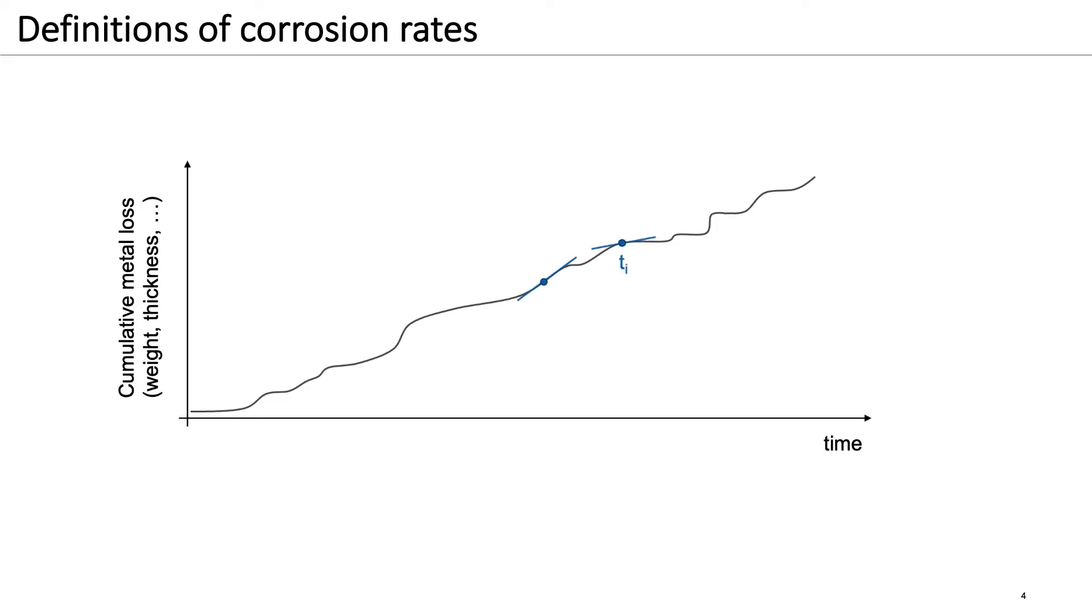The slope of this curve at a certain point in time corresponds to the so-called instantaneous corrosion rate. If we, on the other hand, consider the cumulative metal loss over a certain time, we obtain an average corrosion rate over this time.